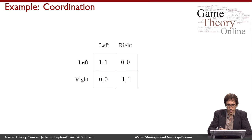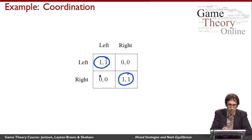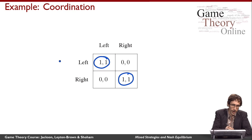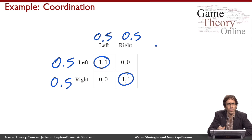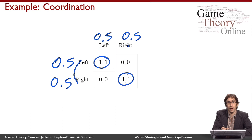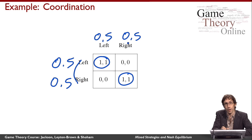Coming back to the coordination game, we've previously seen that left-left and right-right are Nash equilibria. But it turns out there's another equilibrium: 0.5-0.5 is a Nash equilibrium here as well. That's somewhat surprising since it doesn't seem like the best thing to play. But if player 1 is randomizing 50-50, then player 2 can do no better than to randomize 50-50 as well, and vice versa. That makes 50-50, 50-50 a Nash equilibrium of the coordination game too.